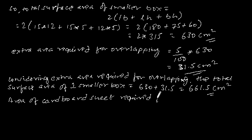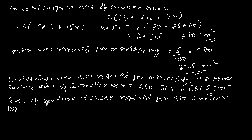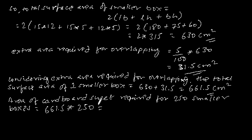Area of cardboard sheet required for 250 smaller boxes is equal to 661.5 × 250, which is equal to 165,375 cm².